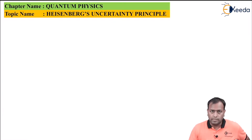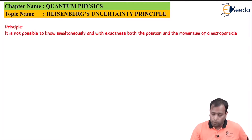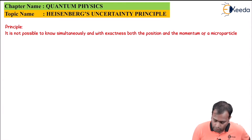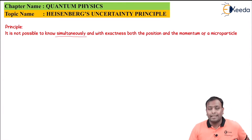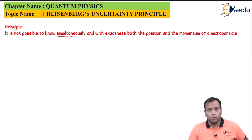Heisenberg's Uncertainty Principle. The principle states that it is not possible simultaneously — it is not possible to know simultaneously — both the exact position and the momentum of a microparticle.